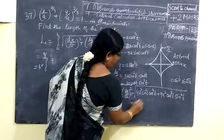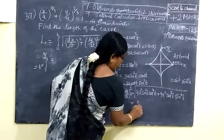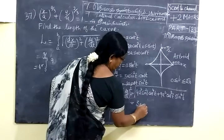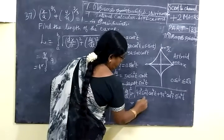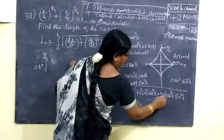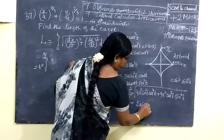So you take the root. In the root, 9a² is sin² t and cos² t is common.